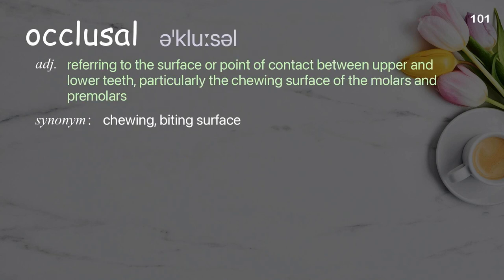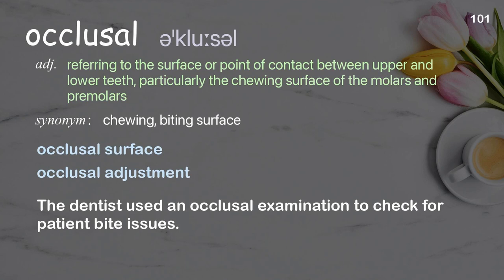Occlusal: Referring to the surface or point of contact between upper and lower teeth, particularly the chewing surface of the molars and premolars. Examples: Occlusal surface. Occlusal adjustment. The dentist used an occlusal examination to check for patient bite issues.